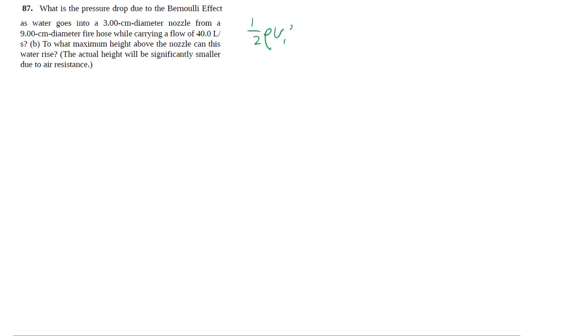In the last example, we talked about how we can use Bernoulli's equation, which basically derives from conservation of energy, to relate the speed, height, and pressure at different points along a fluid that is moving.